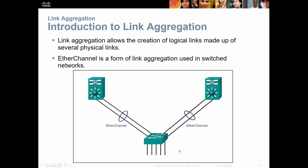It's always denoted with a circle around them — that means logically that's one link, even though physically that's two links. Why do we do this? We can have one gigabit link, or we could do two bonded links together and now we have one two-gigabit link. If we add in a third link or a fourth link, it just grows.